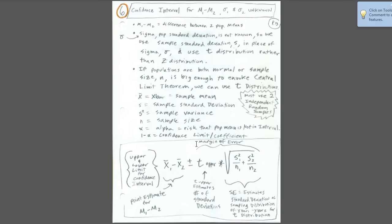In the last two videos we talked about hypothesis testing and confidence intervals for the difference between two population means when sigma was known. In this video, we want to talk about building a confidence interval for the difference between two population means when we don't know sigma — the population standard deviation — from either one of the populations.